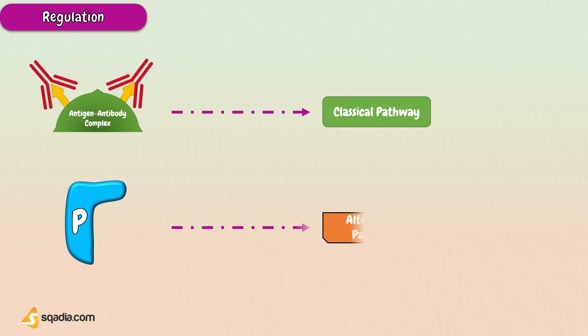Properdin or Factor P is a part of the alternative pathway. It propels the pathway forward by attaching with C3B B to form C3B B B that starts the amplification loop.